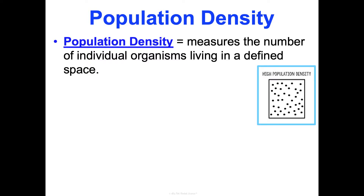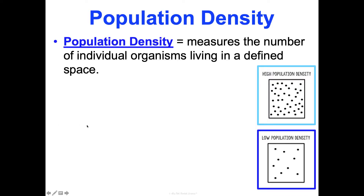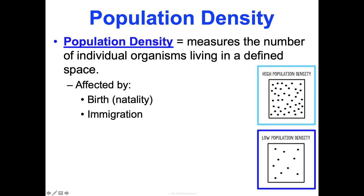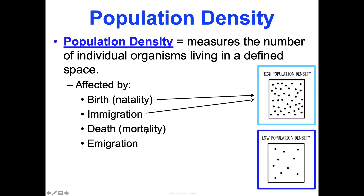When looking at population density, we can describe populations as high or low density — the defined space is the same, but one has many more organisms. Several factors affect population density. Birth (natality) and immigration add organisms and create higher density. Death (mortality) and emigration remove organisms and create lower density. I remember: I for coming in, E for exiting. Those are the larger overarching factors.